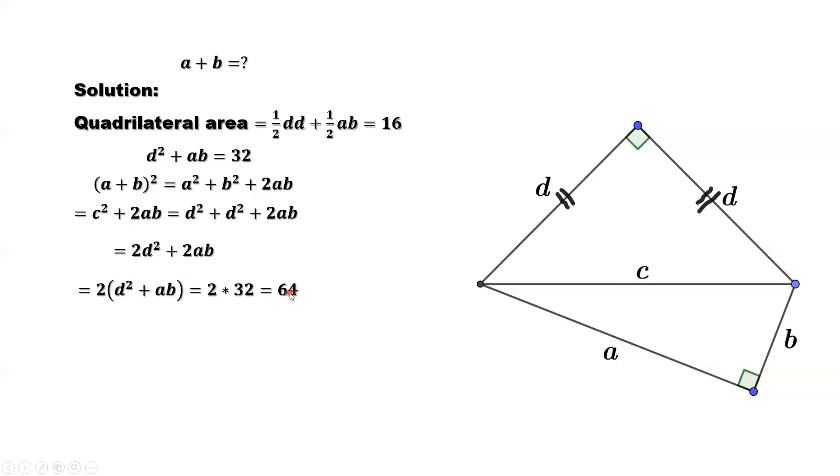64 is not the answer we want. We want a + b. This is (a + b)². We need a + b without the square power. How to get rid of power 2? Take the square root of 64. We have the final answer: a + b = 8. Thank you and I'll see you next time.